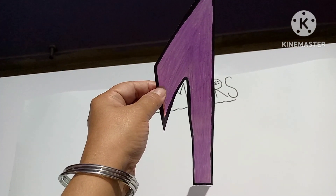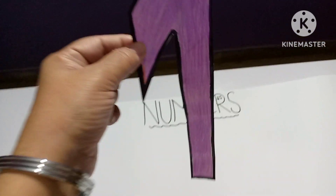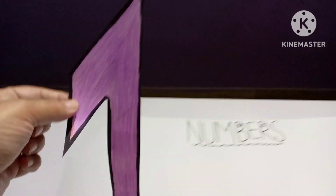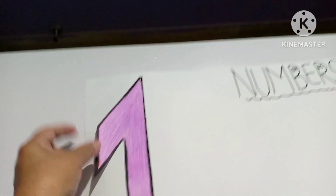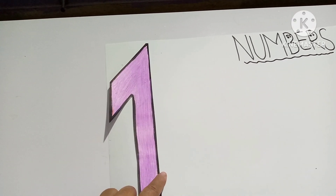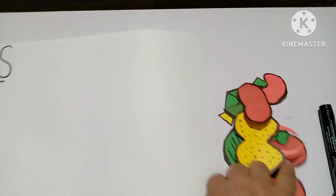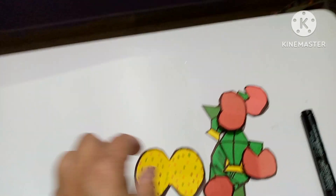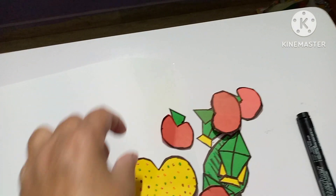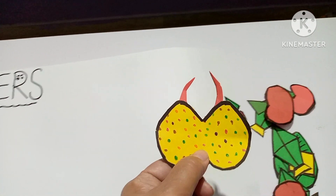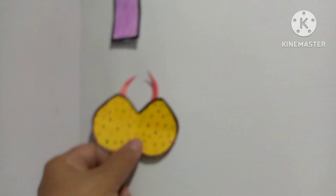This is number one. Here are many things and shapes. One butterfly, here is one butterfly.